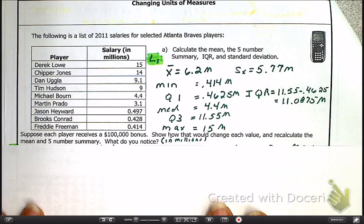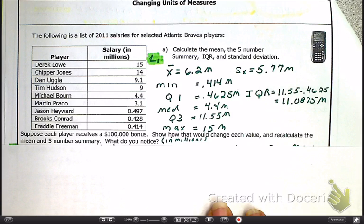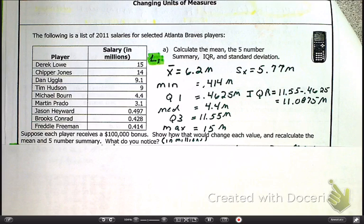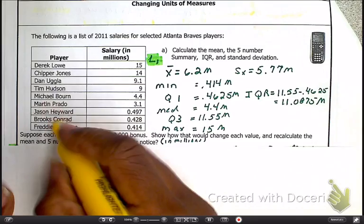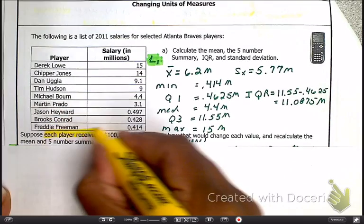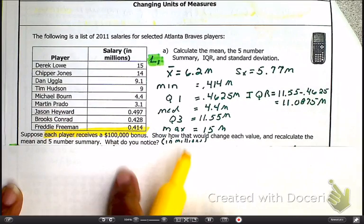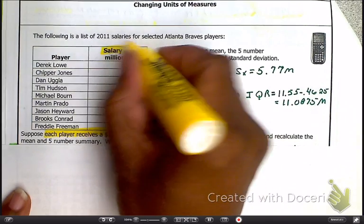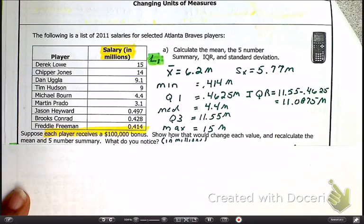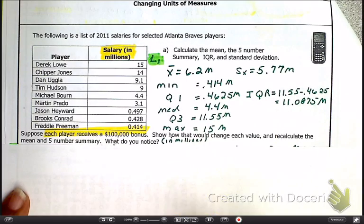Now, the next thing they say here, I didn't mention this, I should have. These are the salaries of the Atlanta Braves in the year 2011. So, let's say that they were given a bonus, that each player received a bonus, because that's really important. And with them being given a bonus, they were given a bonus of $100,000. Would be nice.